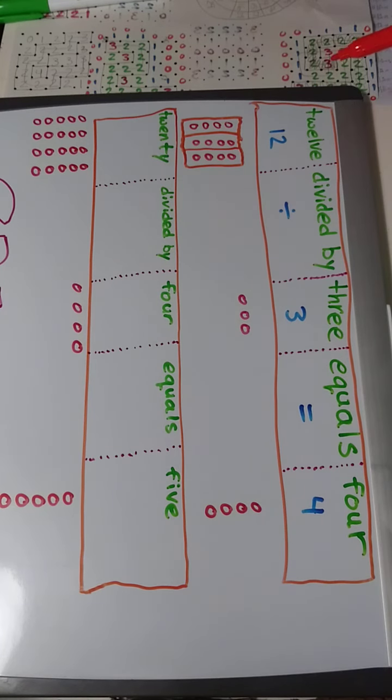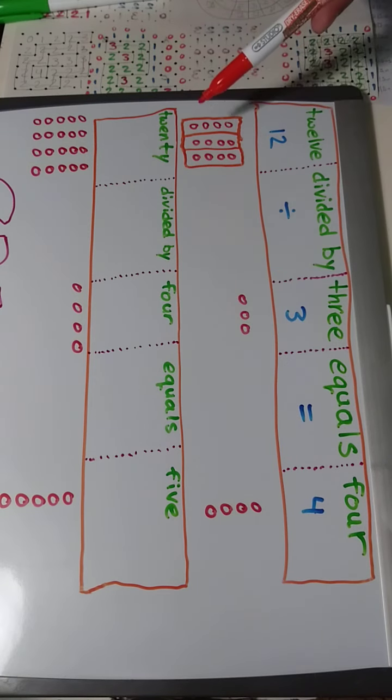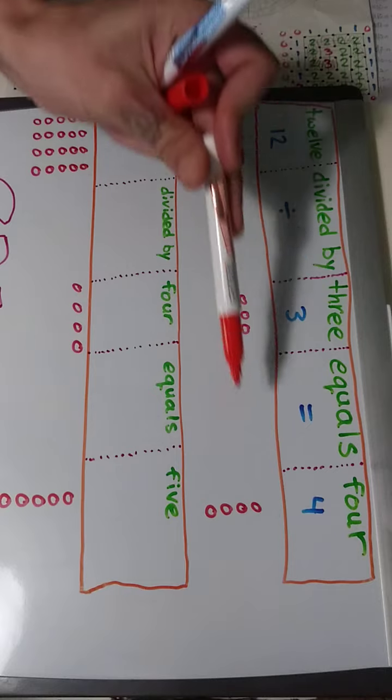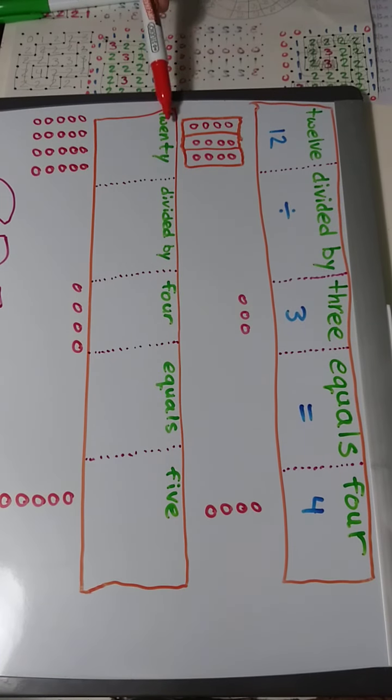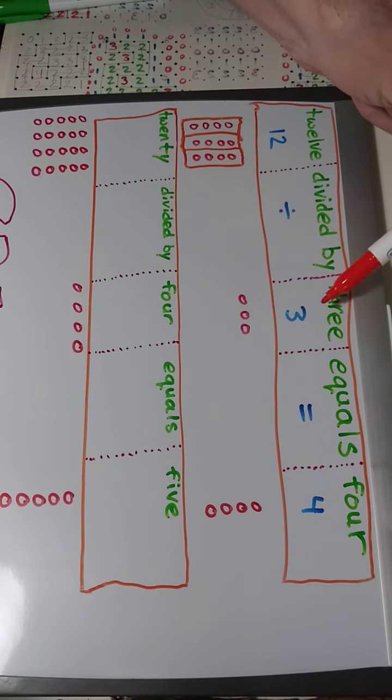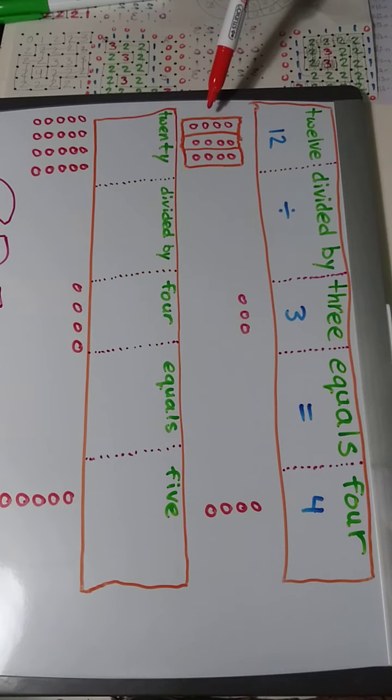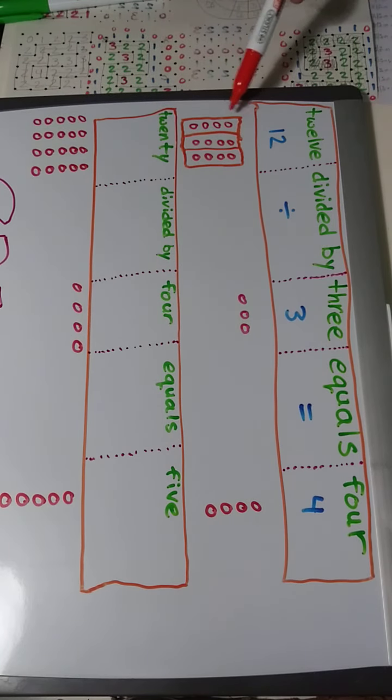So we have 12 divided by 3 equals 1, 2, 3, 4 in each box. Because we have 12, we're dividing it into 3 boxes. How much does that equal? How many do we have in each box? 4.